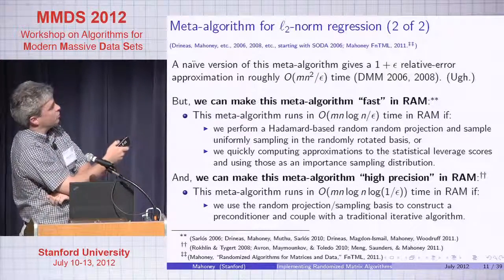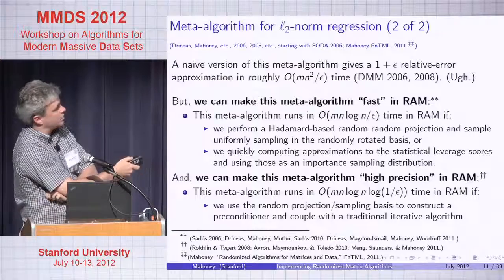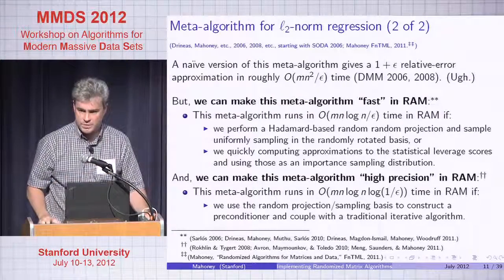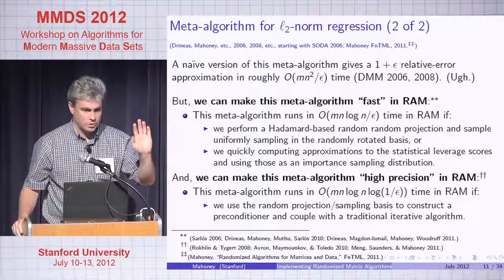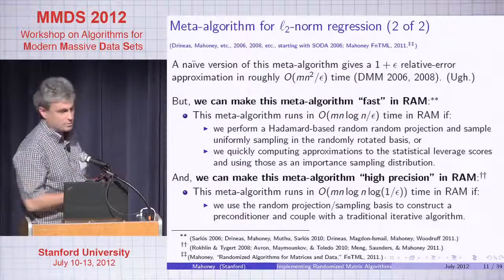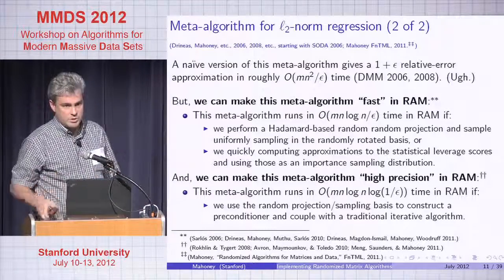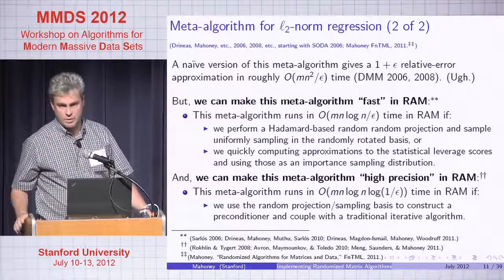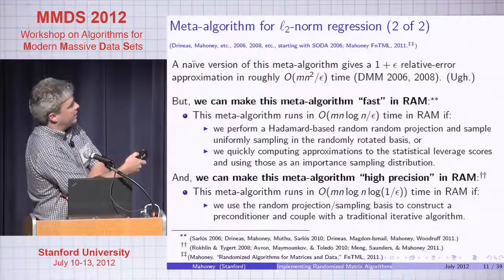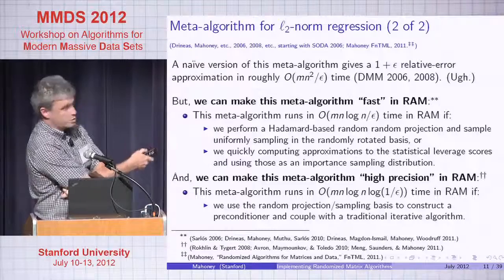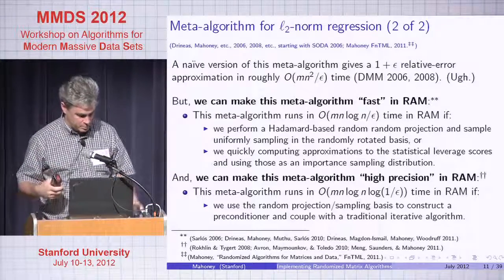This meta-algorithm can run faster in RAM if you use a Hadamard-based random projection and then sample uniformly in the rotated space. Hadamard-based projections rotate you to a random basis where leverage scores are approximately uniform. Alternatively, quickly compute approximations to leverage scores — given a tall matrix, you can compute 1+ε approximations to all leverage scores in faster than n times d-squared time. You can make the meta-algorithm high precision by using the coarse solution as a preconditioner and iterating.